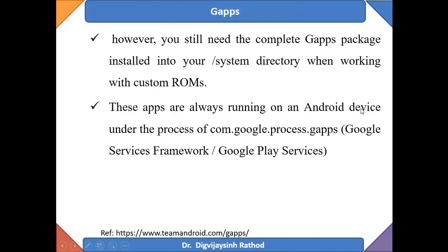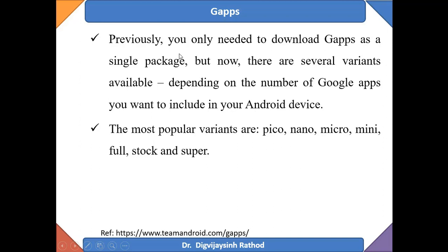Google applications always run on an Android device under processes like com.google.processes.gapps, including the Google Services Framework and Google Play Services. Previously, you only needed to download GApps as a single package, but now there are several variants available depending on how many Google applications you want to include. The most popular variants are Pico, Nano, Micro, Mini, Full, Stock, and Super.